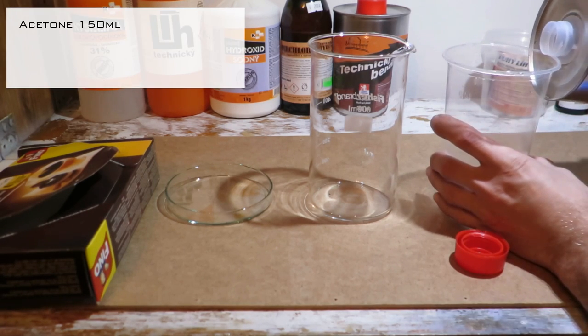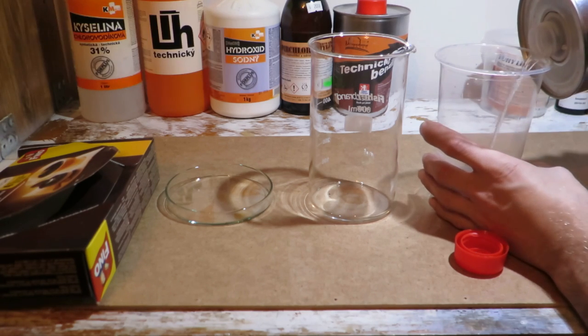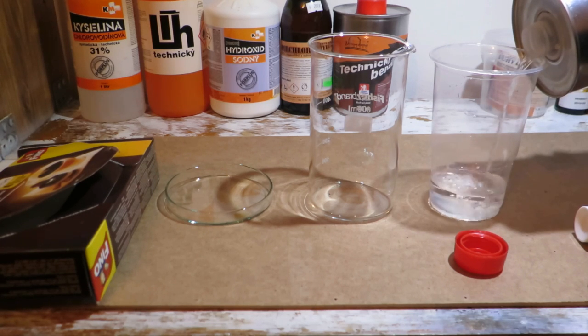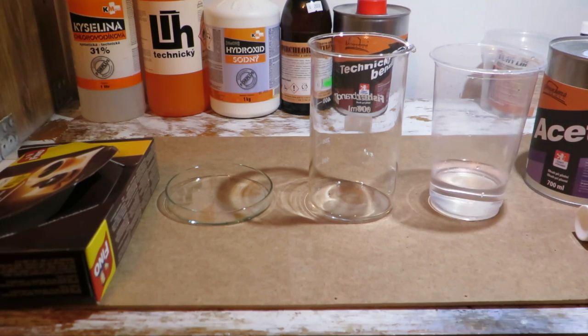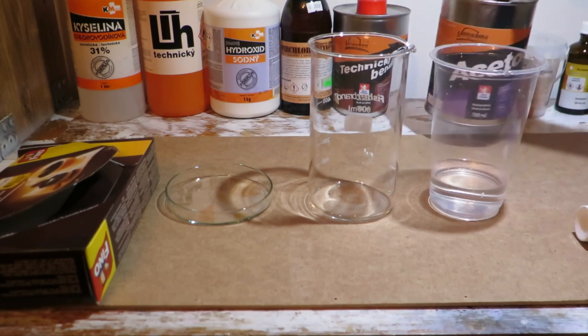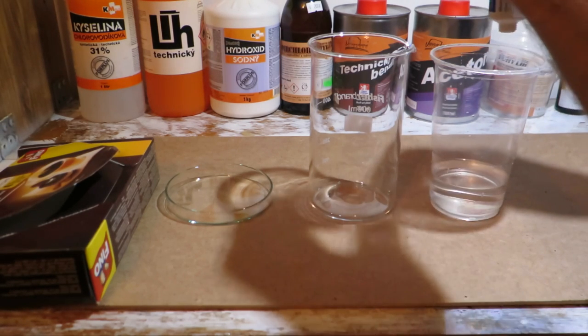We start by adding 150ml of acetone into a disposable plastic cup to dissolve BP from the product. Next add contents of the cream to the acetone.